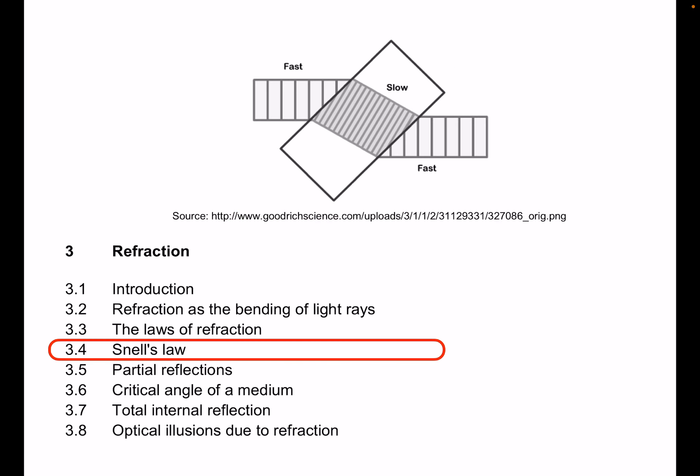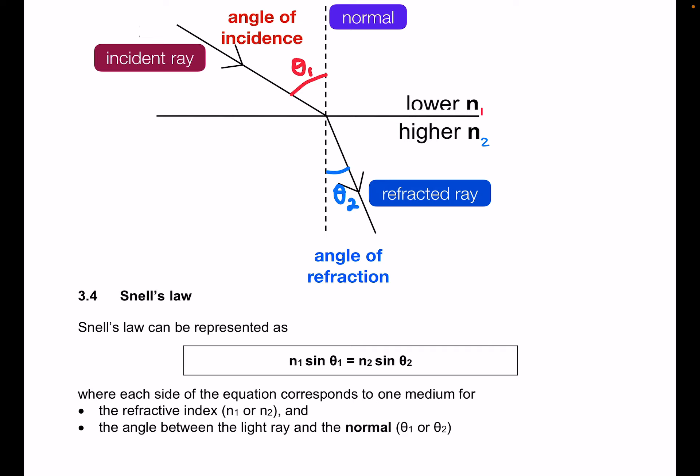Snell's law. Earlier we have seen the ray diagram and the corresponding angles. So if we have the first medium with refractive index n1, second medium refractive index n2, regardless of which is higher or lower, we have angle of incidence theta 1.